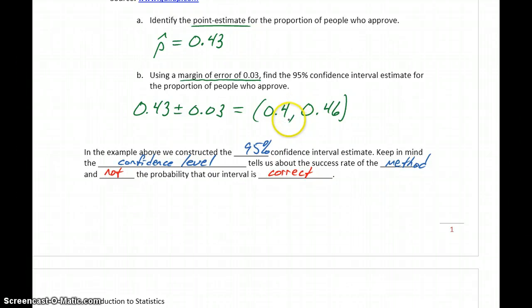There is a true population proportion. If we could go out and survey every single person in the entire United States and ask them, do you approve or disapprove, we could get the true population proportion. That's going to be unfeasible due to time and money constraints. We know that there is some true value, and we're hoping that this interval that we constructed contains that.